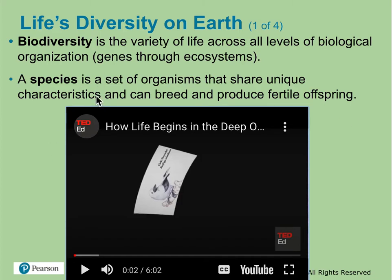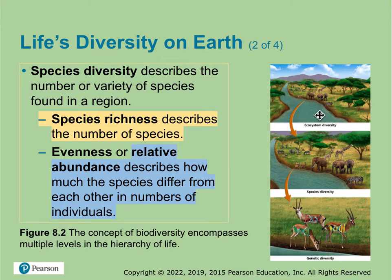Biodiversity encompasses all the genes we have across all ecosystems on our planet. A specific species shares roughly the same type of genes so that they can reproduce and create fertile offspring. When we look at different ecosystems, we care not just about species richness — that's how many different species you have — but also that there is a good abundance or amount of each species, enough to make a good breeding population.